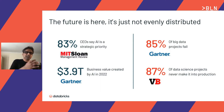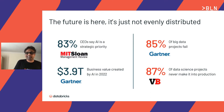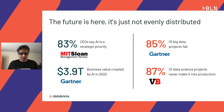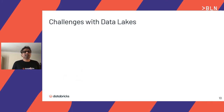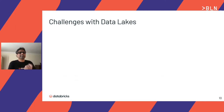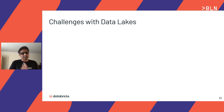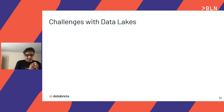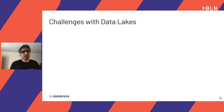Some companies like Uber, Google, and Amazon are having huge success, but many struggle. Most of the reasons are around data sitting in the data lake. We're going to deep-dive on several challenges with data lakes.